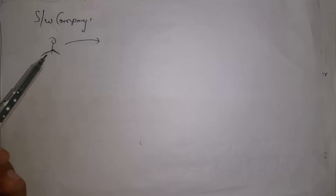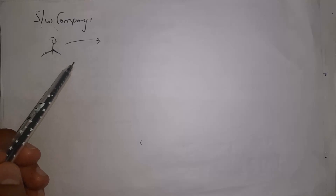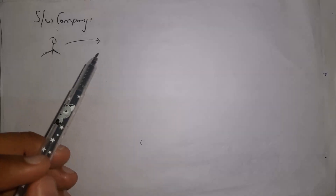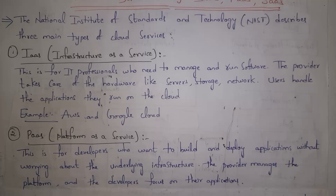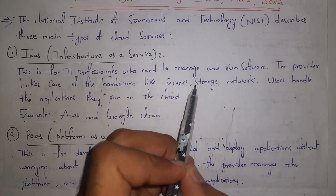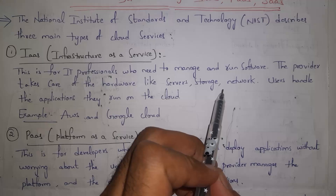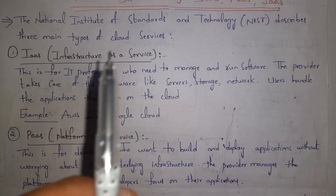For example, let's say I am the owner of a software company and my company developed one software. In order to run my software I need a server, but purchasing and maintaining a server is costly. So I will contact cloud service providers like Google Cloud or AWS, take a server for rent, and place my application on that server so all users can access it. When we select IaaS, cloud service providers give us only hardware like servers, storage, and network — no software. IaaS is mainly used by the administration team in software companies.